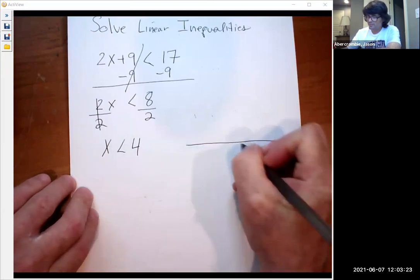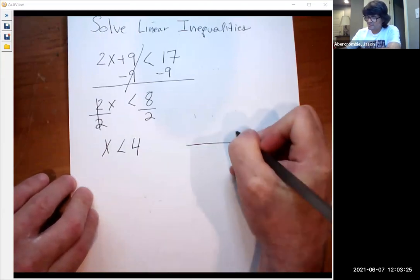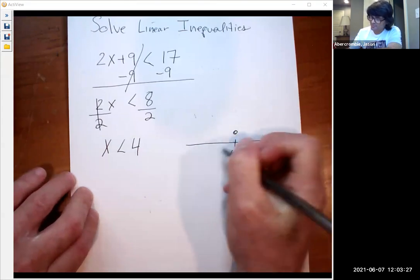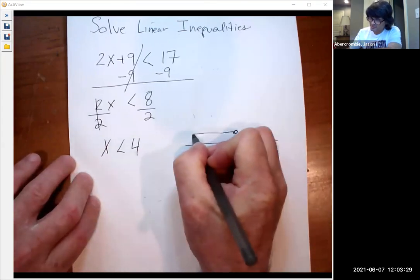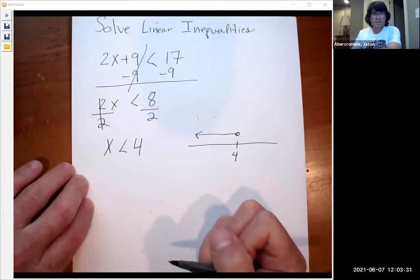So here's my number line. Here's 4. Because it's a less than, we use an open dot, and the graph looks like this. Less than 4.